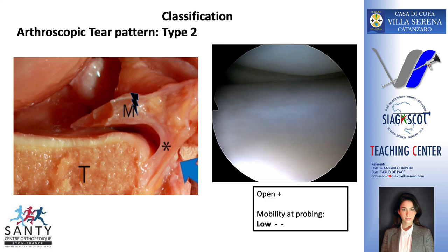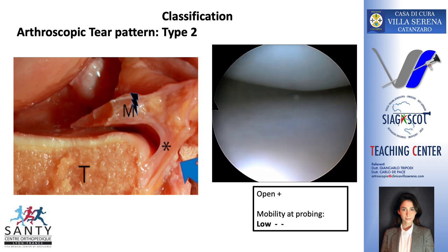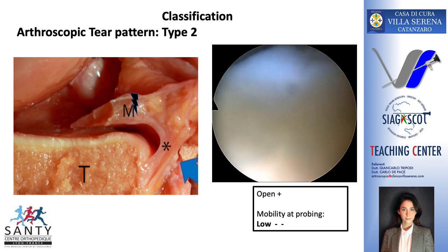Here's the type 2. It's the less common type. It's a partial superior tear. In this case, the meniscal tibial ligament is intact and there may be a potential for spontaneous healing.